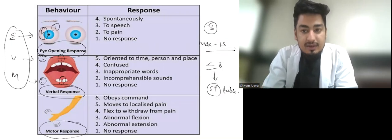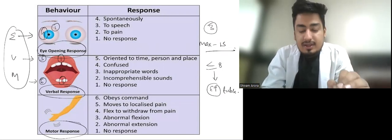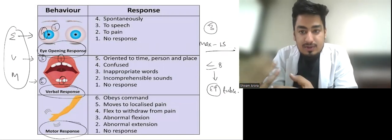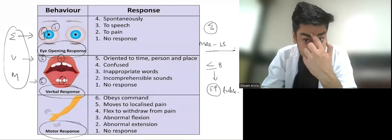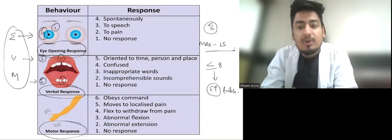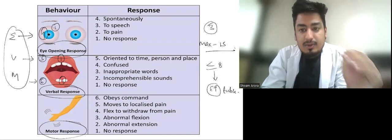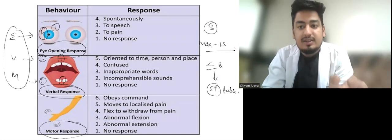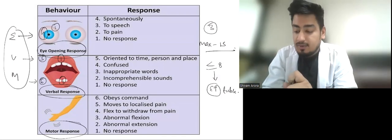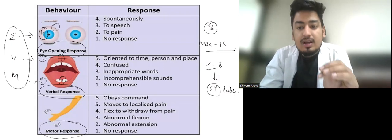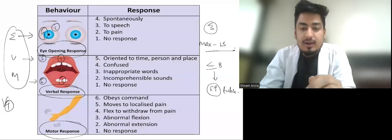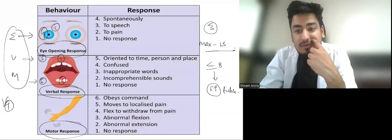GCS is the best possible response. Suppose someone has hemiplegia due to stroke or hemiplegia, but the other side's response is good, then it is M6. Similarly, if one eye has a problem but the other eye's response is good, then it is E4. So we have to see the best response. Also, if the patient is intubated or tracheostomized, then in place of V we use T, like VT, because vocal response we cannot assess.